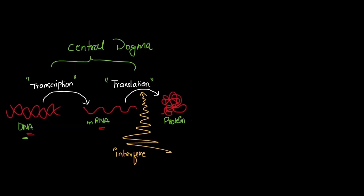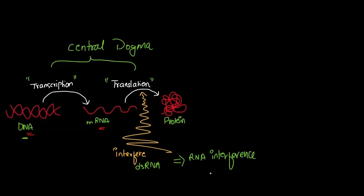So whenever we interfere with this translational step, it will not result in the formation of protein. So in RNA interference, what we do is interfere with this particular translational step by double-stranded RNA. That is why this process is known as RNA interference. So let's see how RNA interference is helpful in today's modern science.